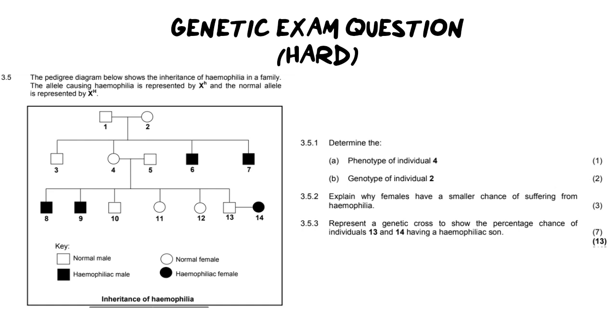Now the question says that the pedigree diagram below shows the inheritance of hemophilia in a family and the allele that causes hemophilia is represented as X small h, and the normal allele is X big H. Now what they're expecting you to know here is two things. One, they expect you to know that hemophilia is sex-linked, and the clue that this is sex-linked is because it's on the X chromosome. And the second thing that they expect you to know is that it is recessive, which is what they've shown over here where we have the lowercase h. Sometimes they won't even give you this information in exams. They want you to know this already and you will need to provide these alleles without being prompted.